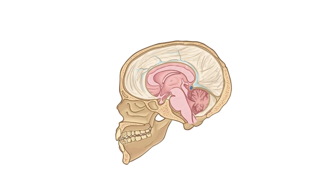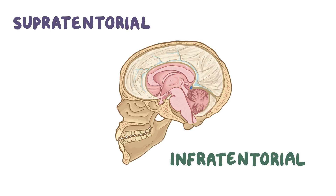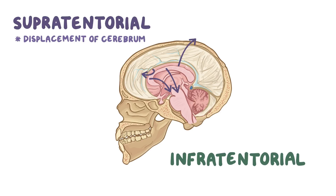Depending on the size and location of the mass effect, there's a possibility of brain herniation, and it can either be supratentorial or infratentorial. Supratentorial herniation refers to displacement of the cerebrum, which is above the tentorium, and infratentorial herniation refers to herniation of the cerebellum, which is below the tentorium.